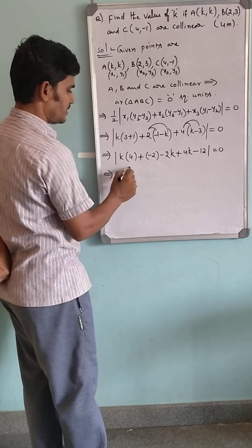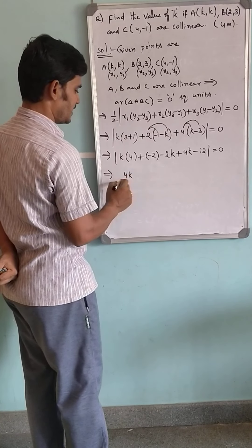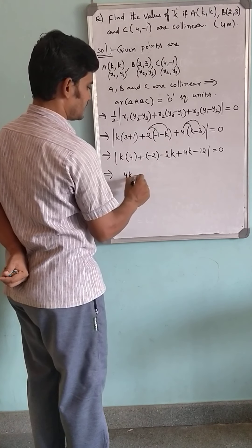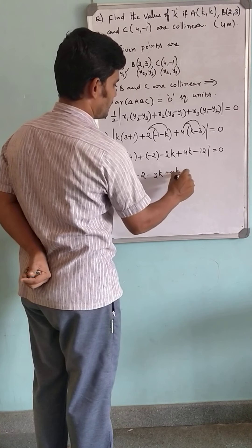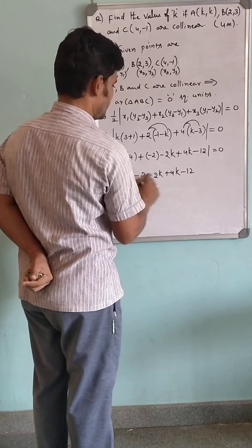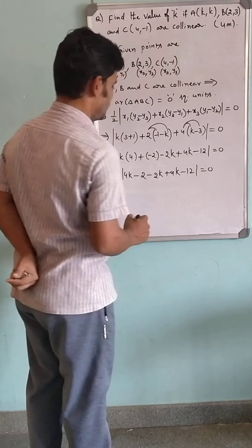4K plus 4K minus 12 is equal to 0. 4 into K is 4K, plus into minus is minus, minus 12. So minus 2K plus 4K minus 12 is equal to 0.